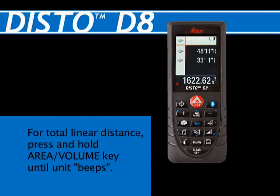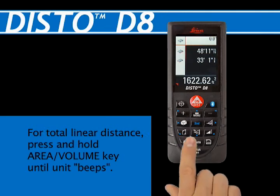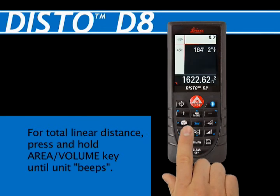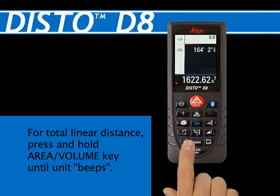To have the DISTO unit calculate the total linear measurement of the room's base — useful for calculating base or crown molding — press and hold the area/volume key until the unit beeps. The total linear distance will appear in the upper right-hand corner of the screen.